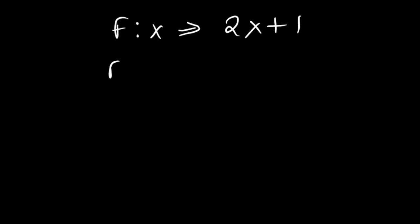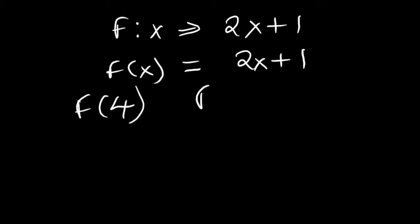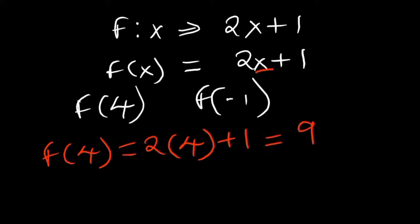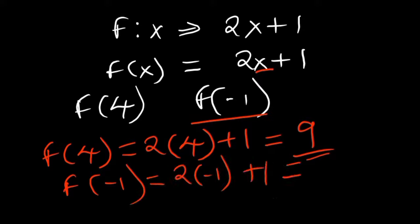A function can also be expressed in function notation. Some basic things you need to know: how to find f(4) or f(-1). When finding the value of a function at a number, wherever you have x in the equation you plug in the given value. So f(4) = 2(4) + 1 = 9. And f(-1) = 2(-1) + 1 = -1.